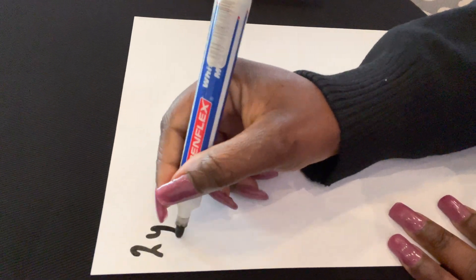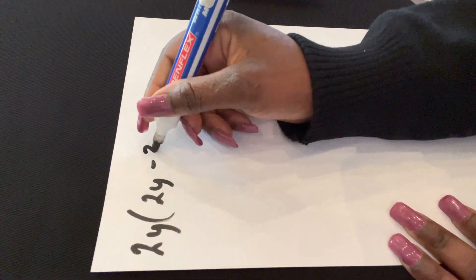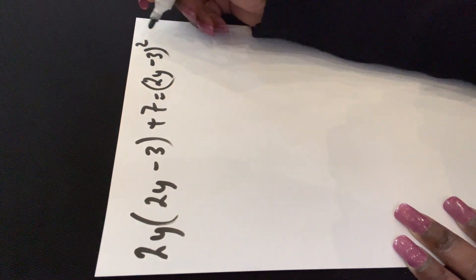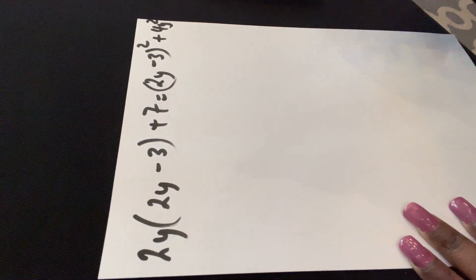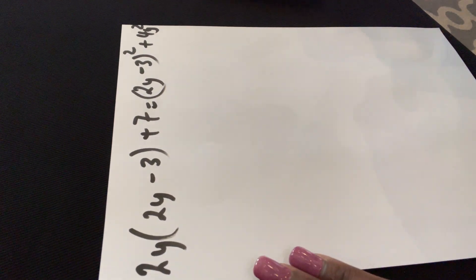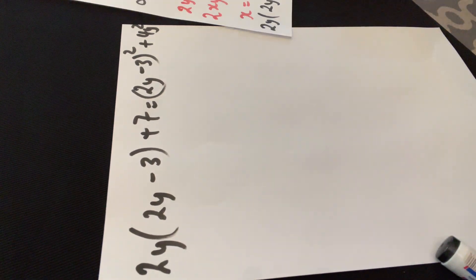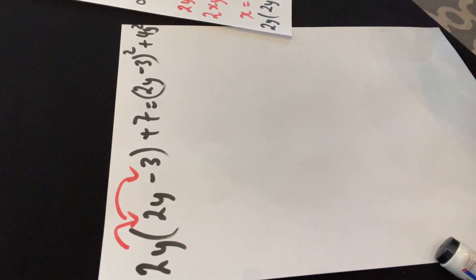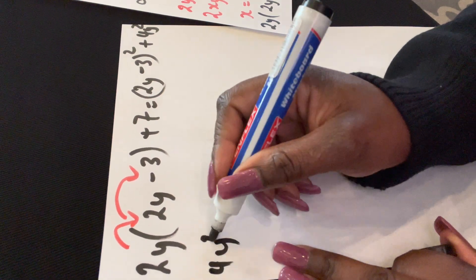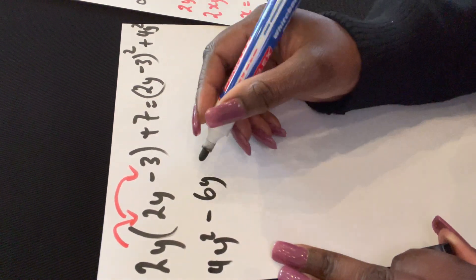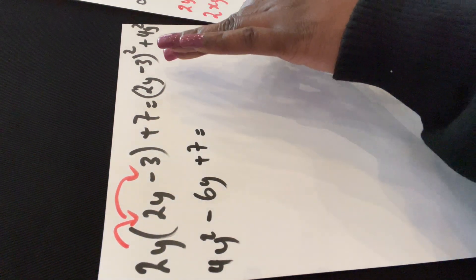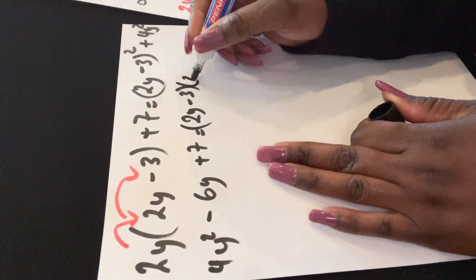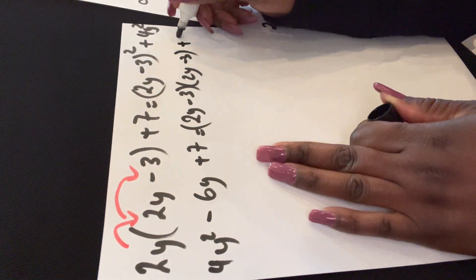So we have 2y(2y − 3) + 7 = (2y − 3)² + 4y². Now I need to multiply throughout, meaning expand the brackets. From the left side I get 4y² − 6y + 7. And on the right side I still need to expand (2y − 3)² plus 4y².